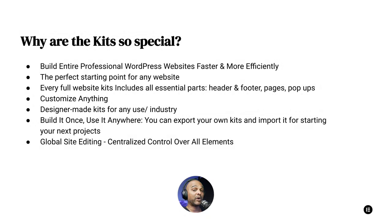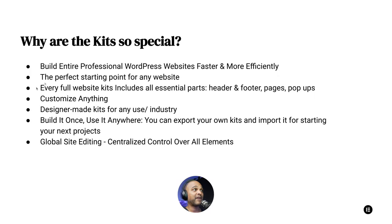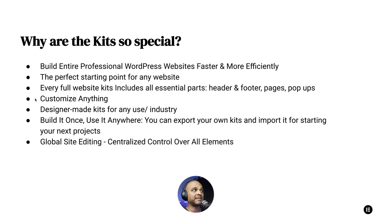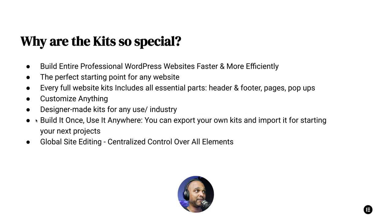Why is the Elementor Kits Library such a big deal? Whatever your level is, it allows you to build entire professional WordPress websites faster and more efficiently. It's the perfect starting point for any website — every full website kit includes all essential parts. Of course, you can customize anything, and these designer-made kits are for any use or any industry. Build it once, use it anywhere: you can explore your own kits and import them for starting new projects. And then we have global site editing — centralized control over all elements.